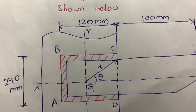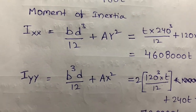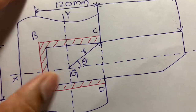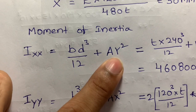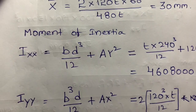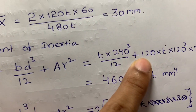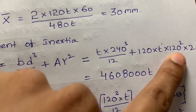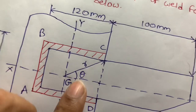We are calculating IXX, IYY, and IZZ. For IXX, the shape is a rectangle, and the formula is BD³/12 + AY². So: T × 240³/12 plus area 120T × 120² × 2 for both sides welding, giving the IXX value.